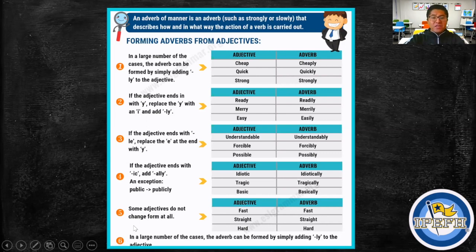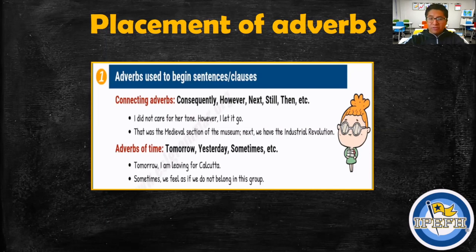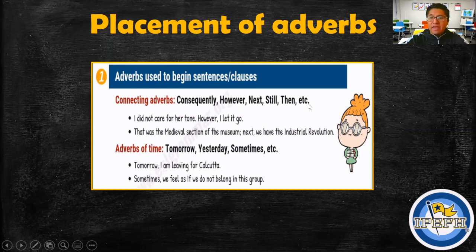Some adjectives do not change form at all — for example: fast, straight, and hard. Now let's continue with where to place the adverb. Adverbs used at the beginning of a sentence or clause can connect sentences — for example: consequently, however, next, still, then, etc.